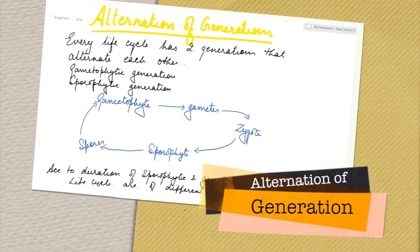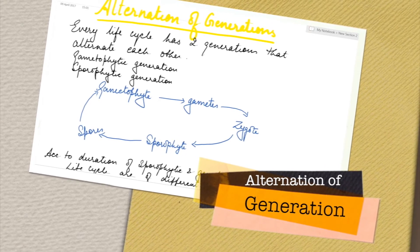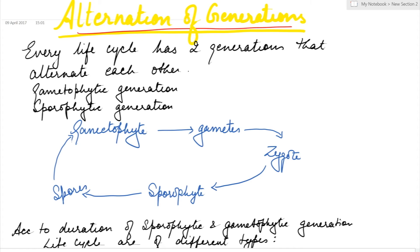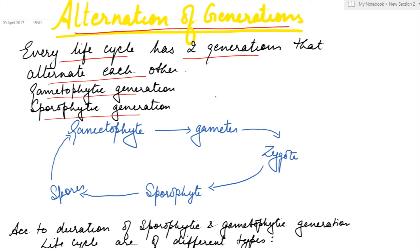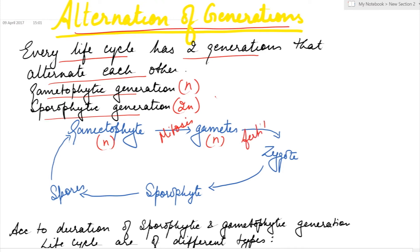Today's topic is alternation of generations. Every life cycle has two generations which alternate with each other: the gametophytic and sporophytic generation. The gametophytic generation is haploid while the sporophytic generation is diploid. The haploid gametophytic generation reproduces by means of gametes, which are produced after mitosis. The gametes undergo fertilization to form the zygote.